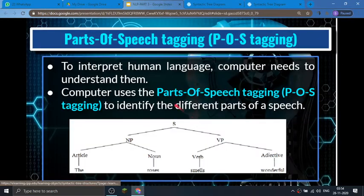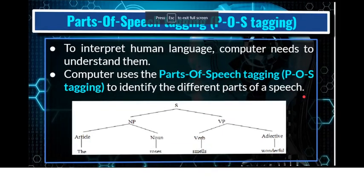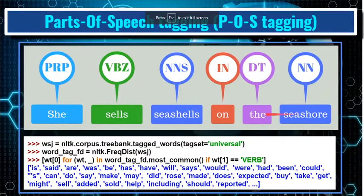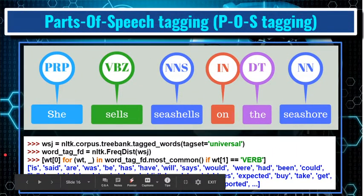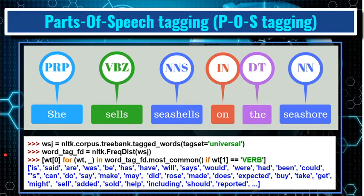Similarly, computers also use parts of speech tagging to identify different parts of speech. This is an example of Python coding — when writing a program and needing to use POS tagging to understand human language, you can use the NLTK library and write code this way for POS tagging. No need to go into detail; I have just shown you an example so you can understand how it works in AI coding.